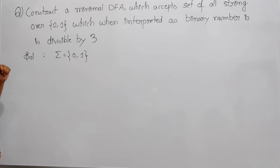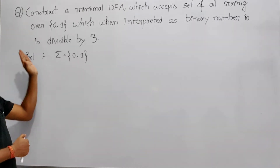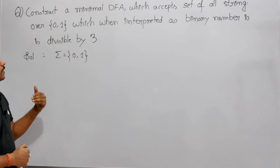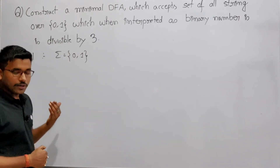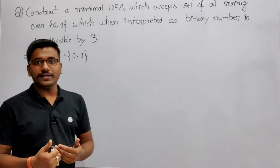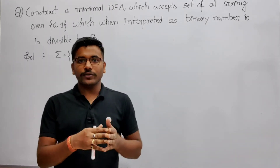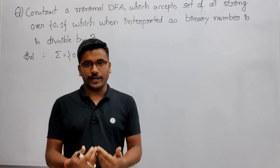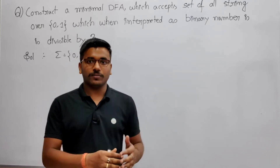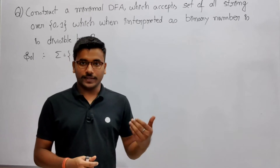Now see the next question. It is saying that construct a minimal DFA which accepts the set of all strings over {0,1} which when interpreted as a binary number is divisible by 3. Sigma is going to be {0,1}; you have to assume 0,1 as a binary number and it should be divisible by 3.